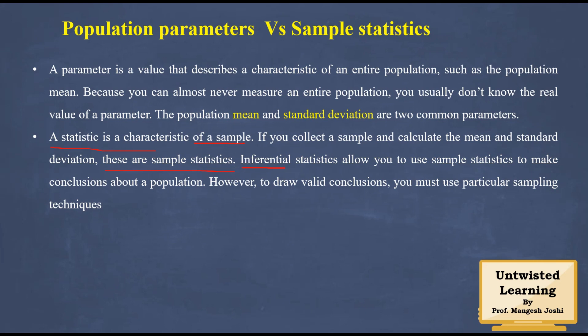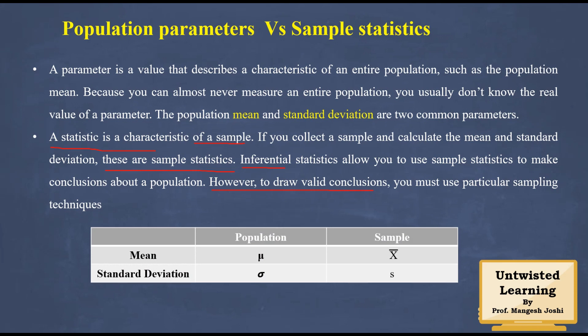However, to draw valid conclusions, you must use a particular sampling technique — the right choice of sampling technique is required. For representing the population mean, you use the mu symbol, and for sample mean you use x-bar. To represent standard deviation of a population, you use sigma, and for sample standard deviation you use s.